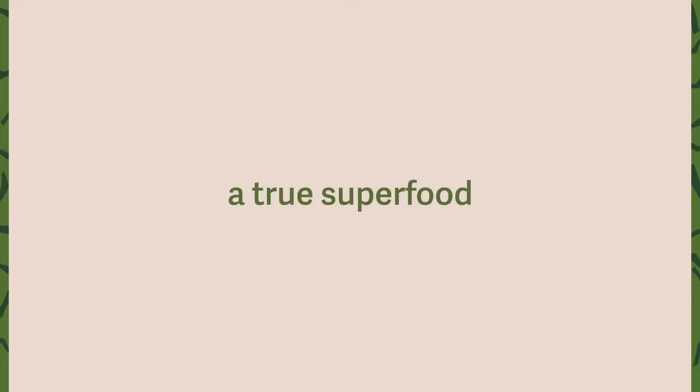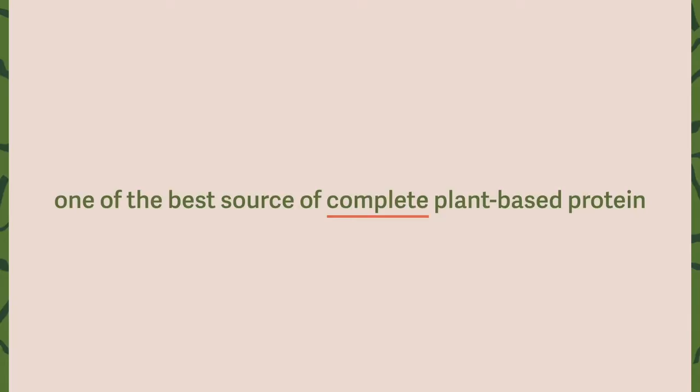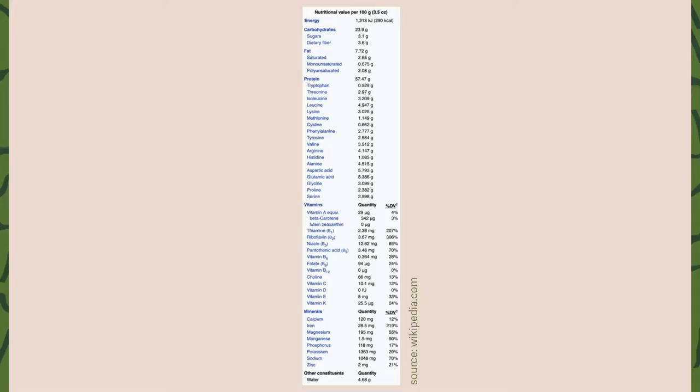Indeed, spirulina is one of the original superfoods because of its unique nutritional profile. It is one of the highest plant-based sources of complete protein with all 8 essential amino acids, as well as 10 of the 12 non-essential amino acids. It is also extremely high in beta carotene, much higher than carrots, minerals such as iron and gamma-linoleic acid, amongst others.